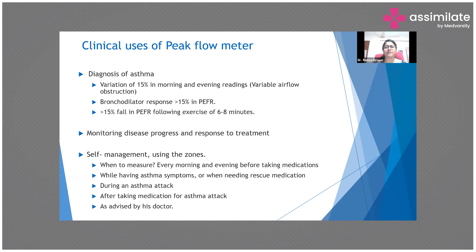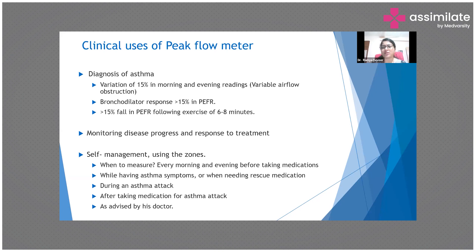The second use is monitoring disease progress — a very common use. Every asthma patient should be encouraged to have a peak flow meter at home, just as diabetic patients have glucometers and hypertensive patients have BP monitors. The third use is self-management: patients in remote areas with limited medical access can self-manage effectively if they're taught the green, yellow, and red zone system.